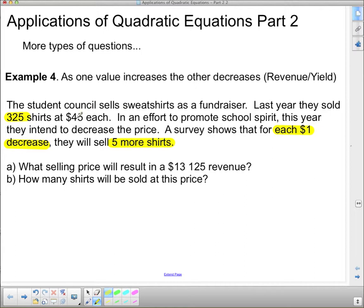Okay, so I'm going to highlight the important information here. Each $1 decrease, and that's important, they sell 5 more shirts. So for every time they decrease the price by $1, they sell 5 more shirts. This part's important too. Right now they sell 325 at $45 each. They're not asking us for maximum or minimum anymore. They're asking us for an exact revenue.